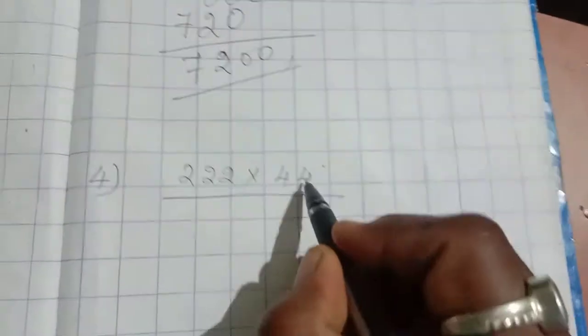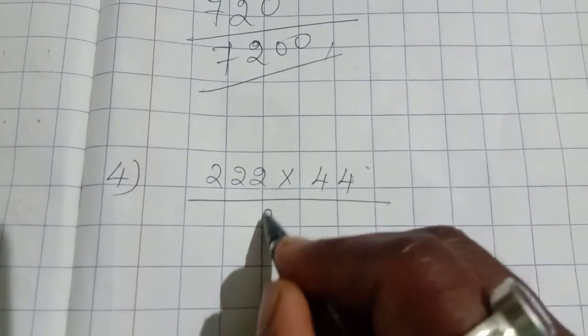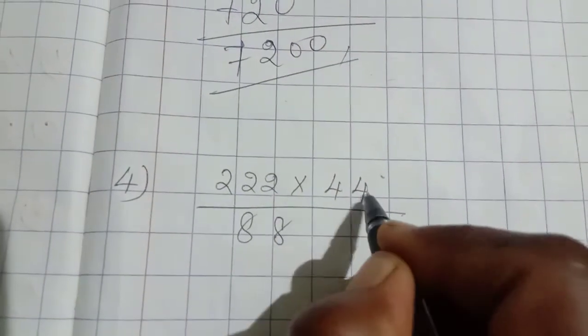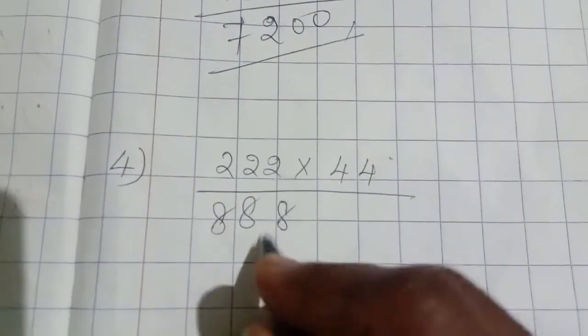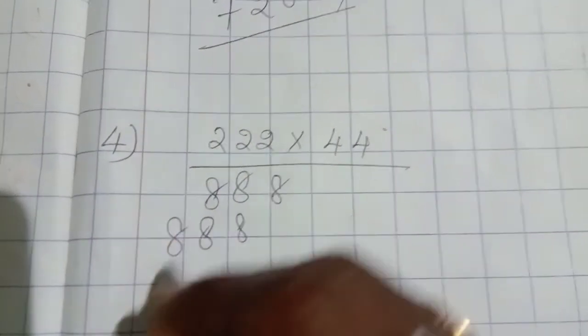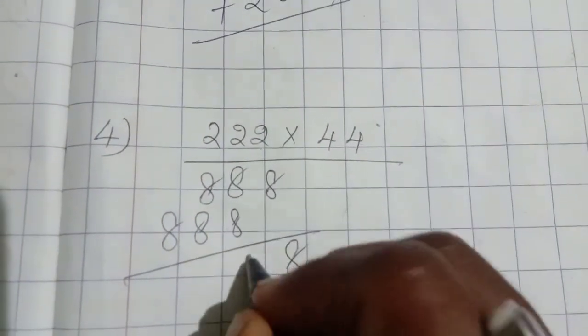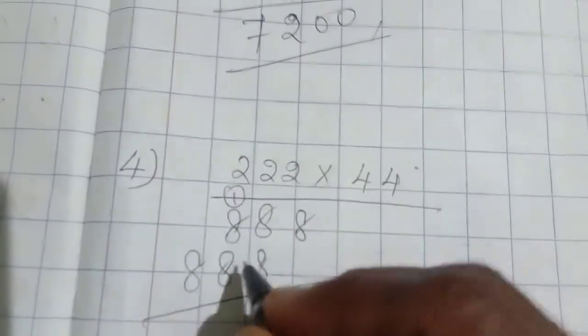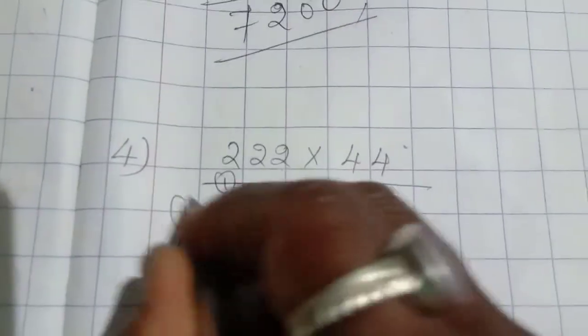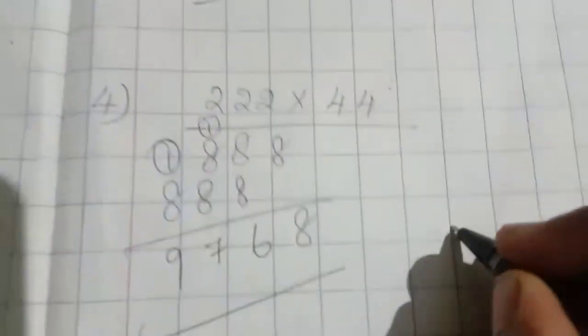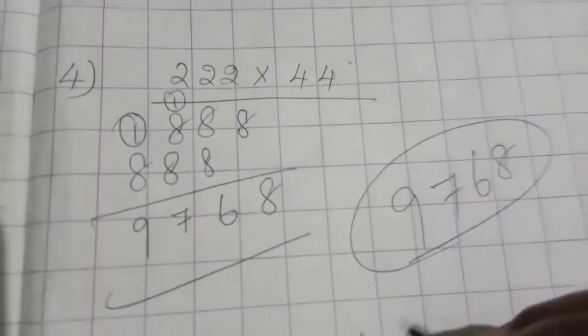Next, one more sum. Four twos are eight, four twos are eight, four twos are eight. The same way, eight, eight. Eight, sixteen plus one is seventeen, plus one is nine. Nine thousand seven hundred and sixty-eight is the answer.